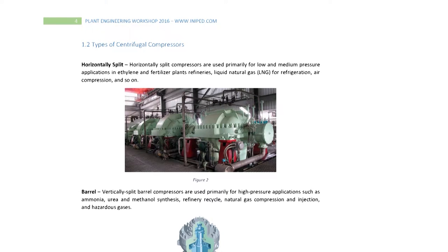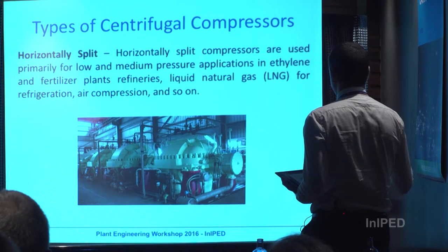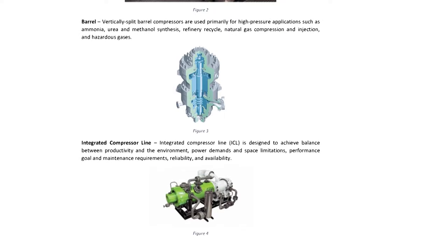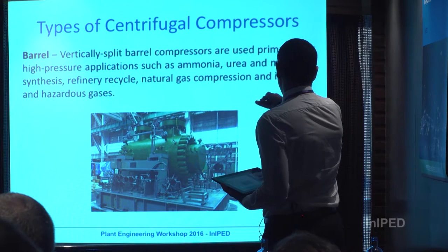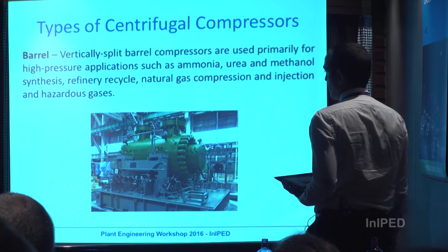In the industry, there are many configurations and many different compressors. The horizontal split is used for low and medium pressure applications in petrochemical industry, oil and gas, and so on. The barrel compressor — vertical split barrel — is used for high pressure applications with gases including hydrogen, urea, ammonia, methanol, and nitrogen.